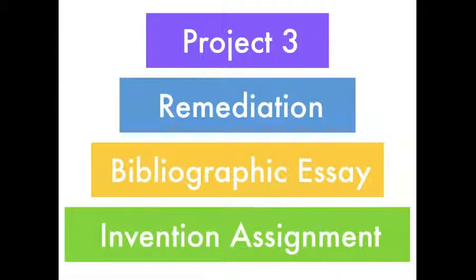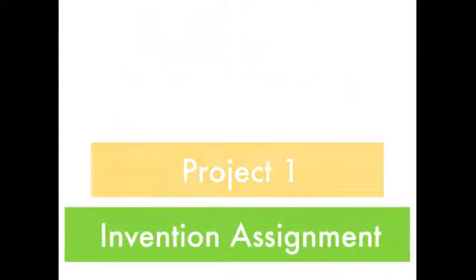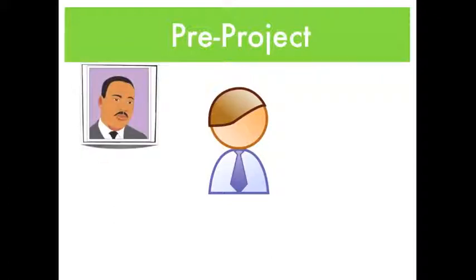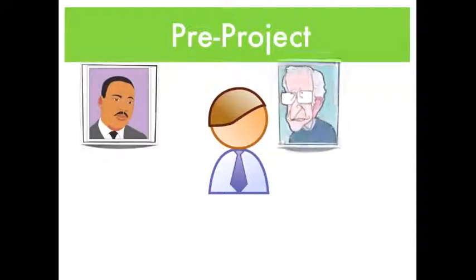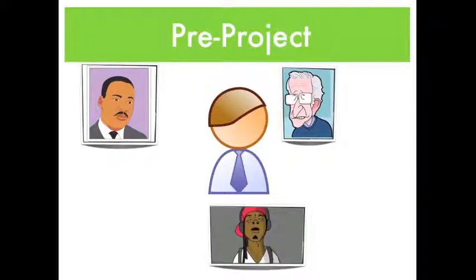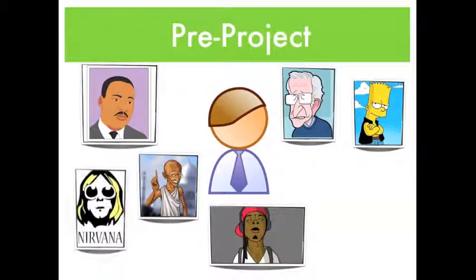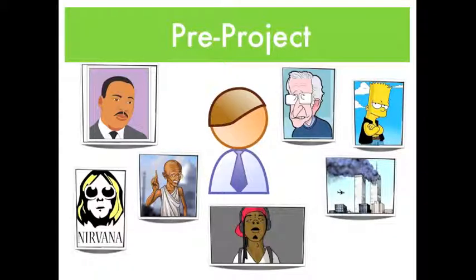The pre-project, titled Invention Assignment, asks students to identify a person or event that had or has significance in their lives. Being that the purpose of this pre-project is inventive, that is to generate a topic for Project 1, it is very important that students demonstrate an ability to rationalize their choice of person or event, connect it explicitly to personal experience, and articulate precisely why this person or event is impactful to their lives.